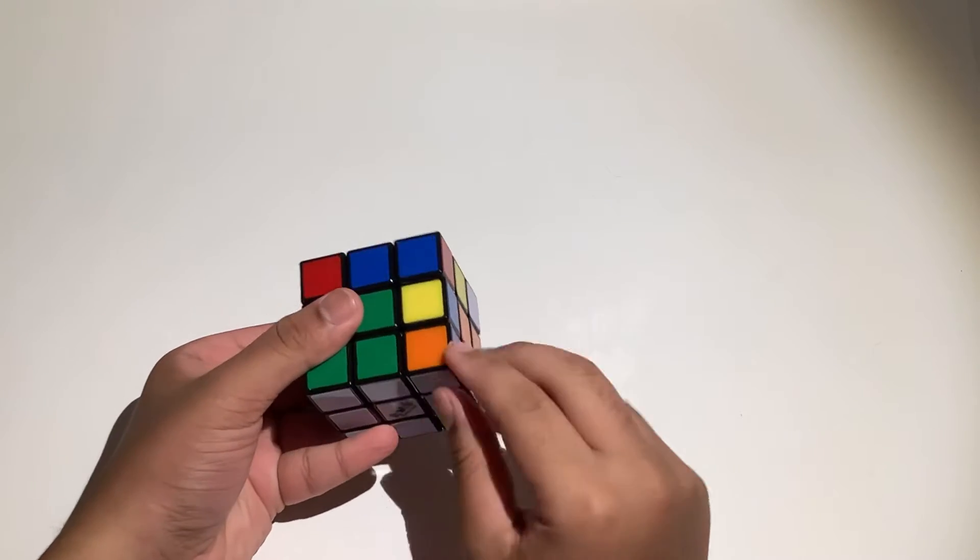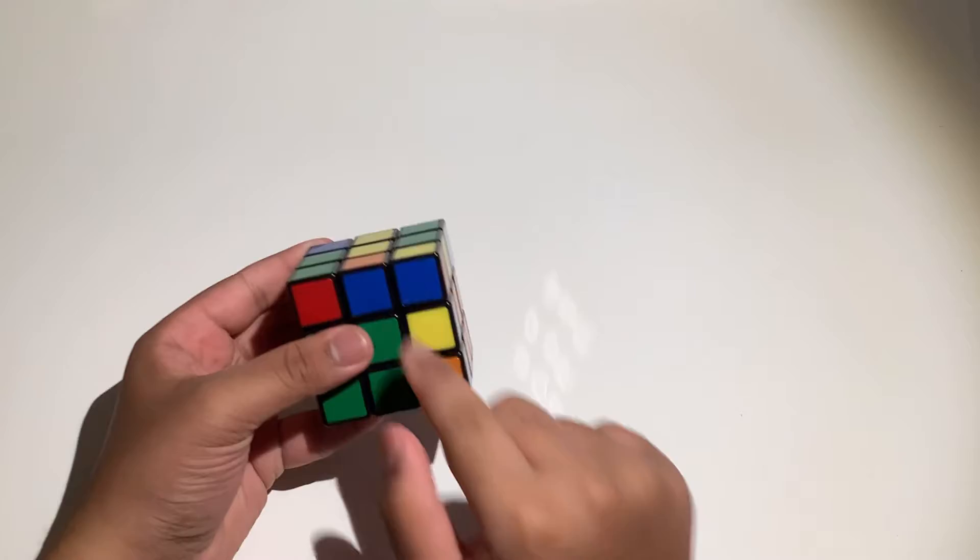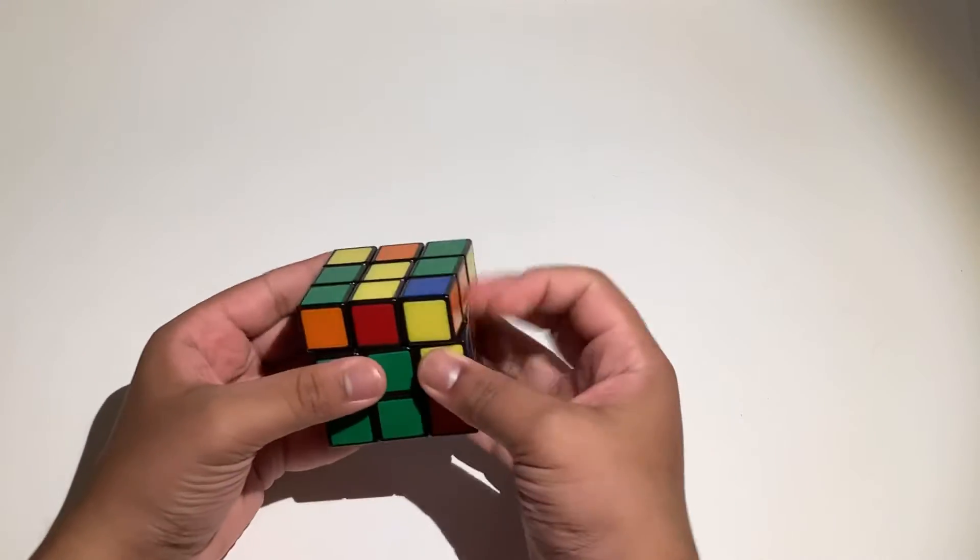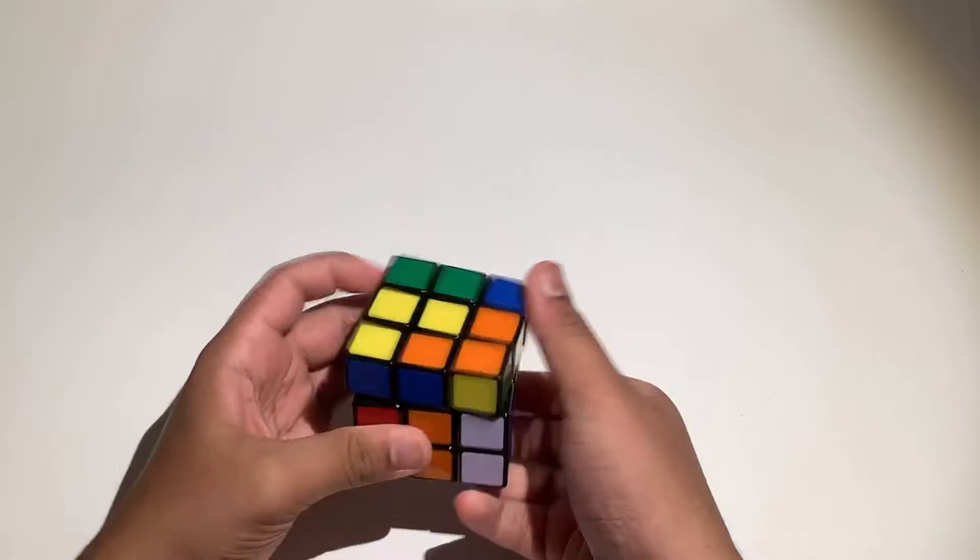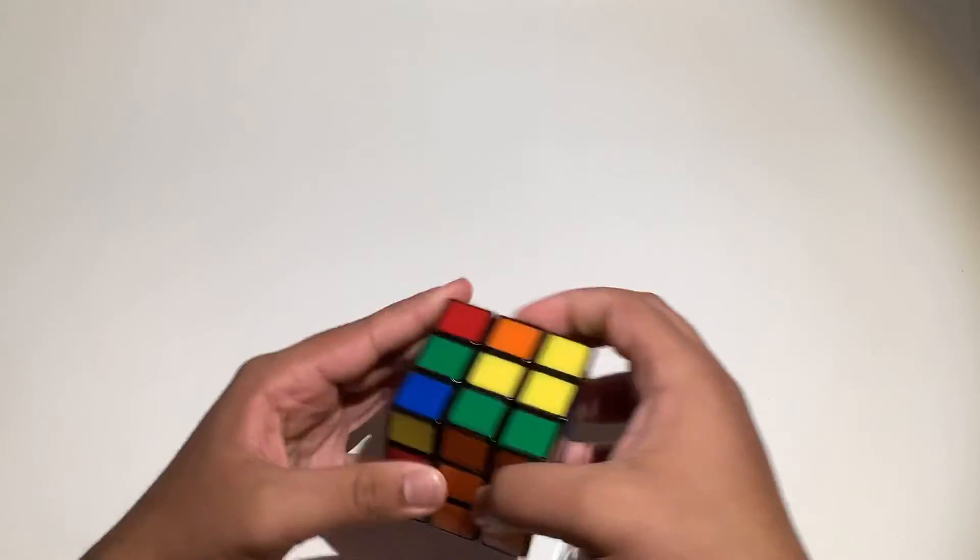So here we have the case, the trapped corner and these two are opposite. Normally a person would do something like this and then rotate and then insert, which is an unnecessary rotation.